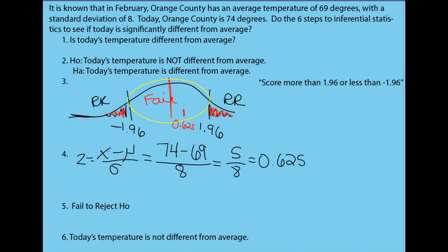Since I failed to reject the null I can go down here in step six and make a conclusion. Really all that it can end up saying, because I failed to reject the null, is that today's temperature is not different from average. What we end up doing is making the conclusion that we are left with. If we had rejected the null because the z-score was in this rejection region, then I could have made a conclusion that was stemming from the alternative. But in this case the z-score was in the middle and so we failed to reject the null, so the only conclusion we can make is that there is no difference.